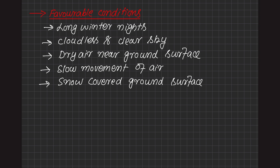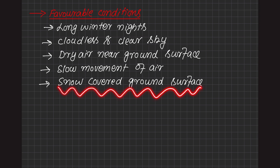The next condition is slow movement of air. Slow movement of air or static conditions result in no transfer or mixing of heat in the lower layers of the atmosphere. Finally, a snow-covered ground surface results in maximum loss of heat through reflection of incoming solar radiation.